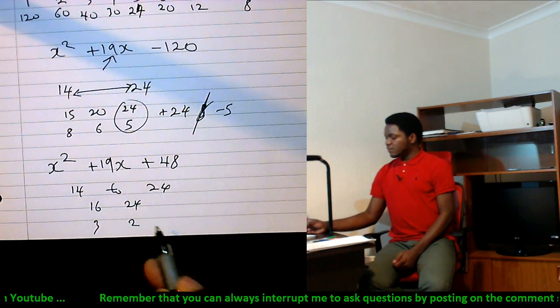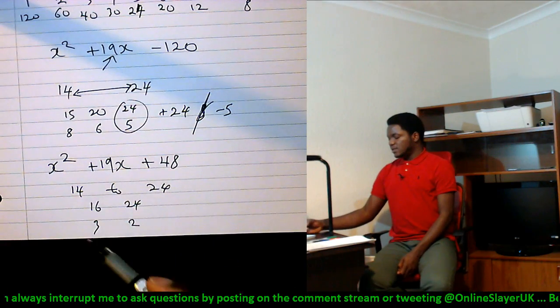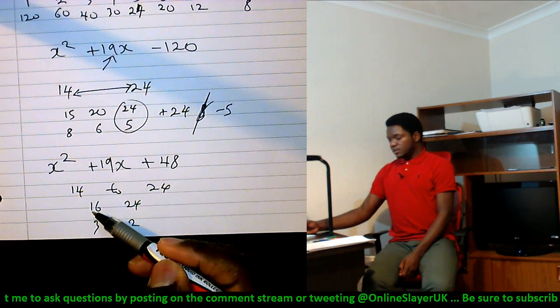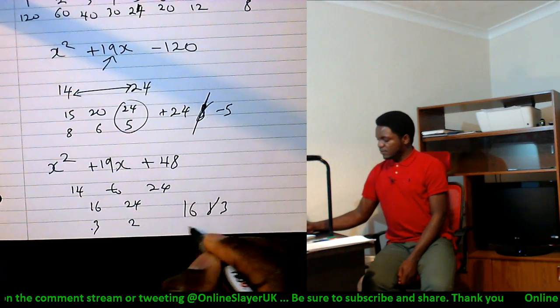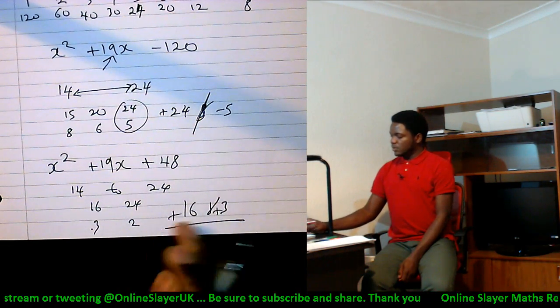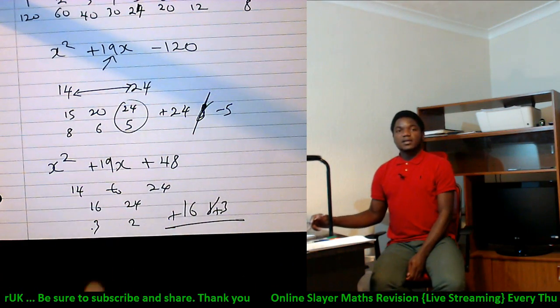So, these are the factors of 48: 16 times 3, 24 times 2. Which of these can give us 19 when you add them up? 16 plus 3, yeah? So, 16 and 3, plus and plus. We'll multiply to give you 48, and we'll add up to give you 19.